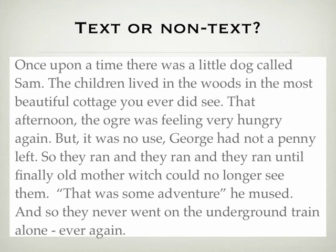What about this text? 'Once upon a time there was a little dog called Sam. The children lived in the woods in the most beautiful cottage you ever did see. That afternoon, the ogre was feeling very hungry again. But it was no use — George had not a penny left. So they ran and they ran and they ran until finally Old Mother Witch could no longer see them. That was some adventure, he mused. And so they never went on the underground train alone ever again.' This is a bit different — though it's still a non-text, it is more text-like than the preceding examples. Why?